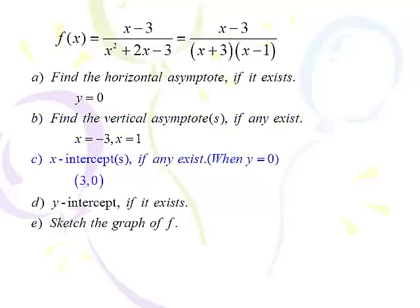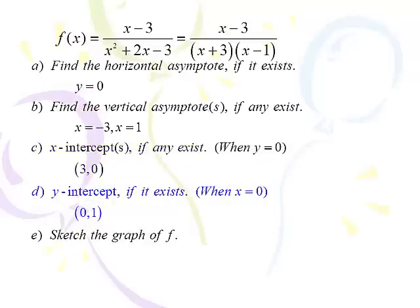The x-intercept is where y equals 0 — where the function equals 0. It's a fraction, so the only way to make it equal to 0 is to find a value of x that makes the numerator 0. The only value that makes the numerator 0 is 3, so (3, 0) is our x-intercept. For the y-intercept, put 0 in for x into the original function. You get negative 3 on top and negative 3 on the bottom, which gives 1. The y-intercept is easy — just put 0 in for x. There can only be one y-intercept; you can't have two or it wouldn't be a function.